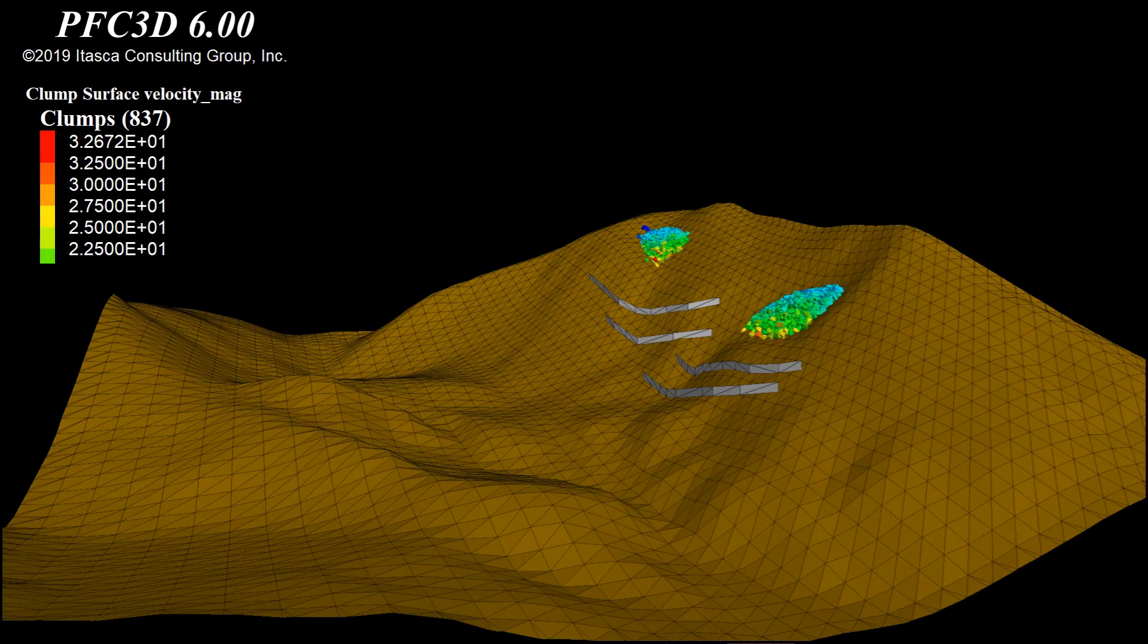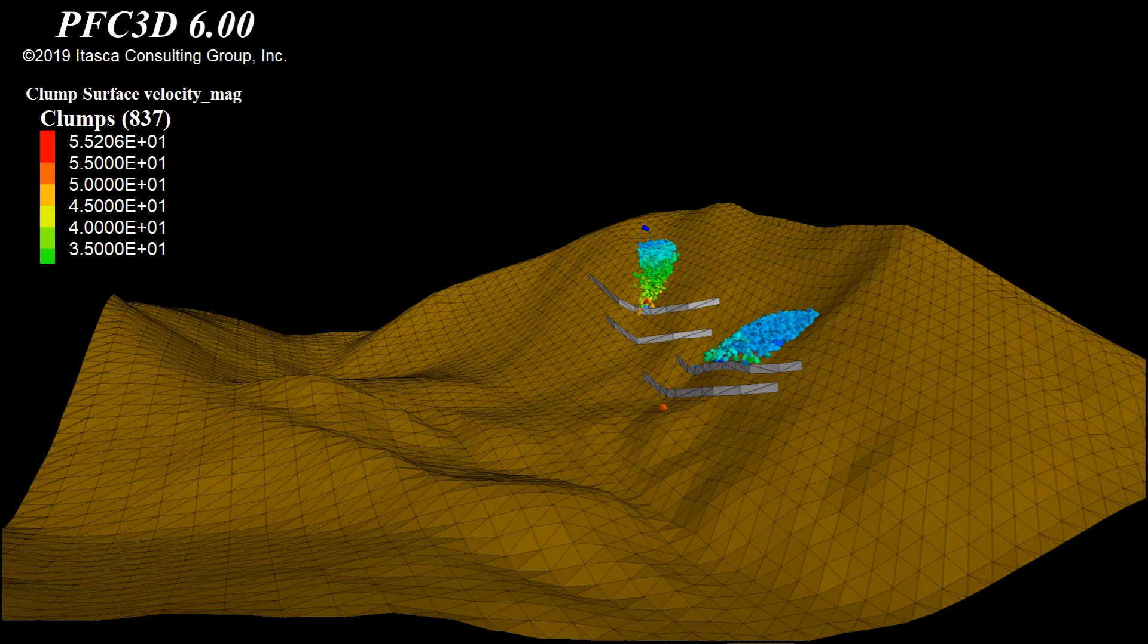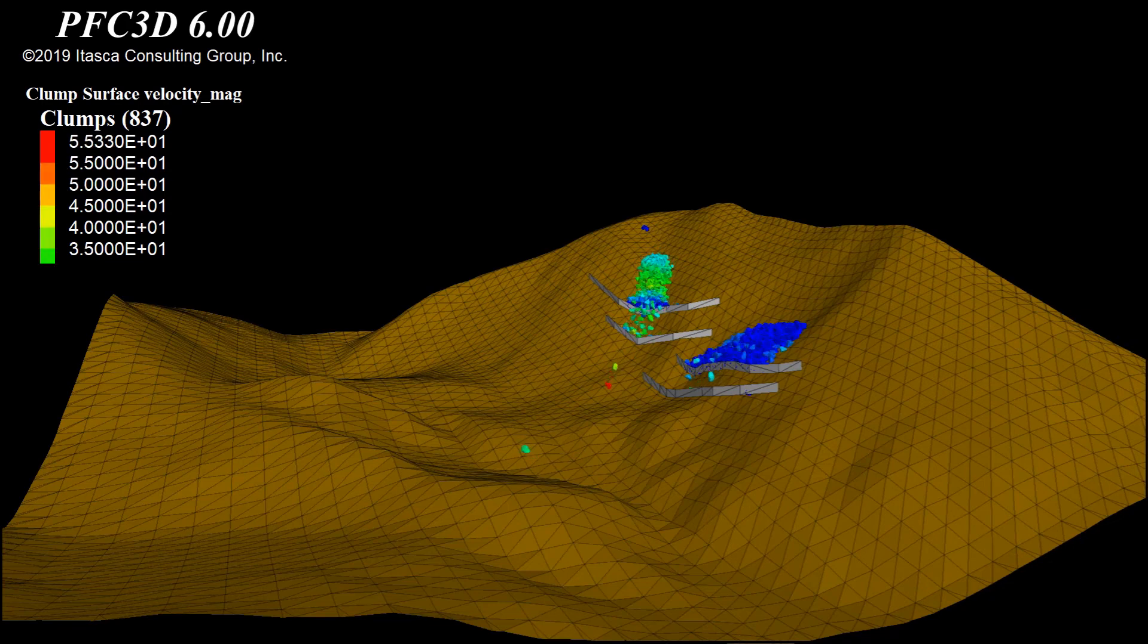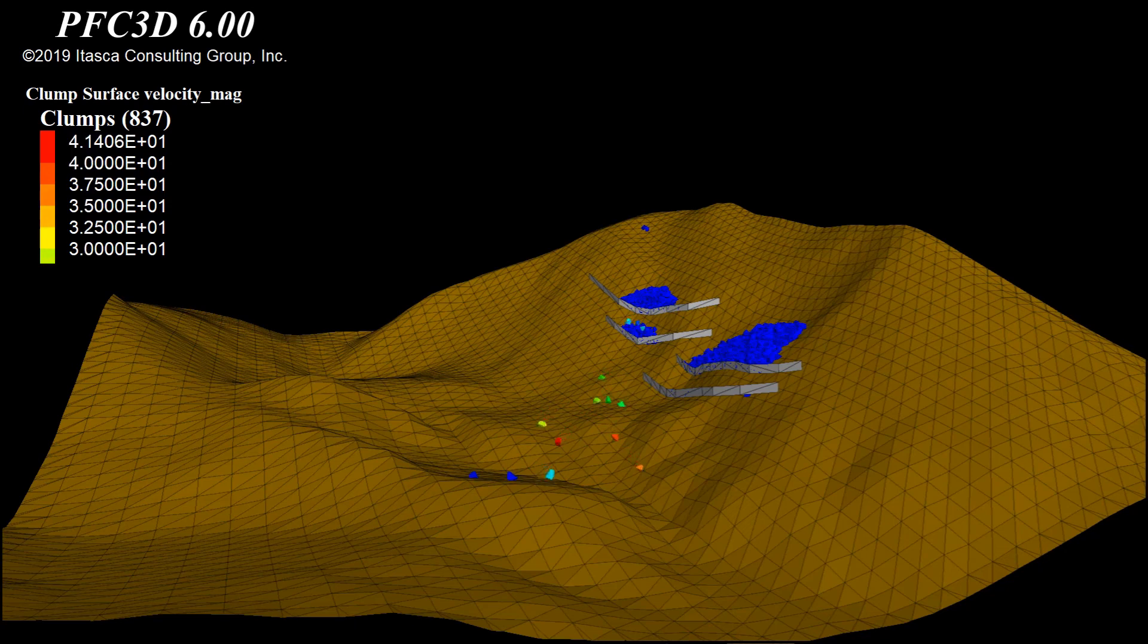As you can see, the slope materials start flowing downwards with initial zero velocity and later gain velocity. The particles start bouncing as they gain velocities and acceleration. Some particles have sufficient velocity to cross over the check walls, but most of the material gets arrested by retaining walls and check walls.